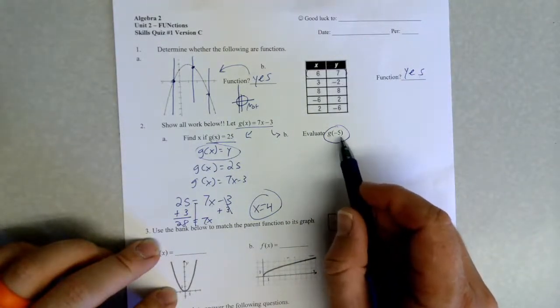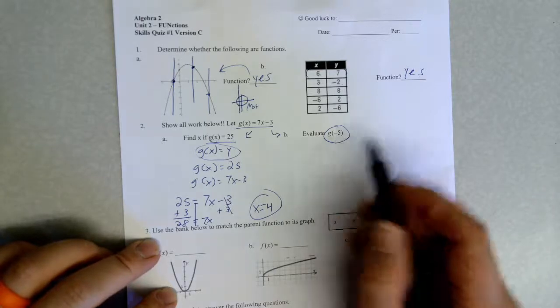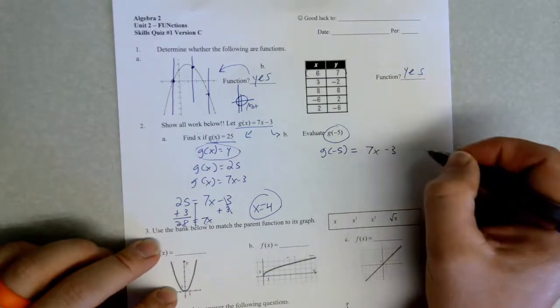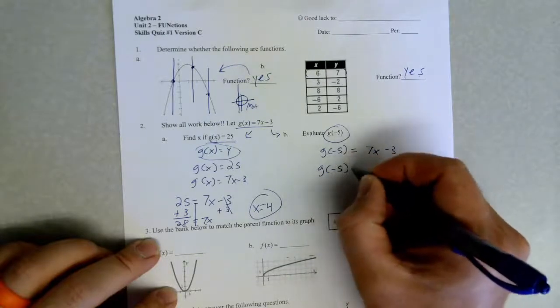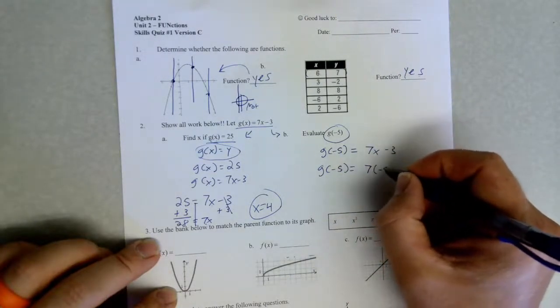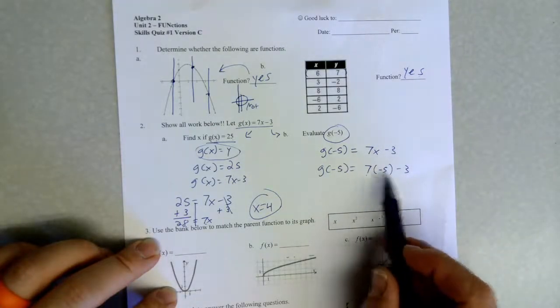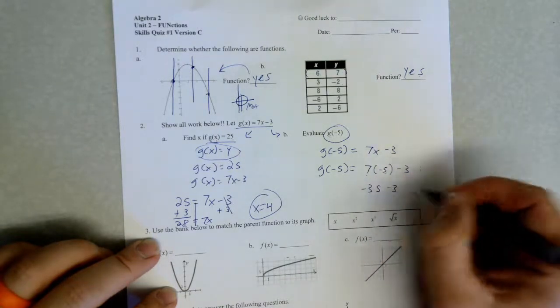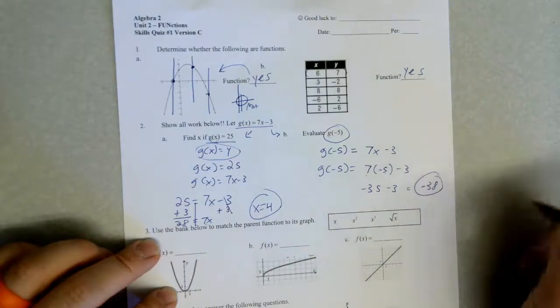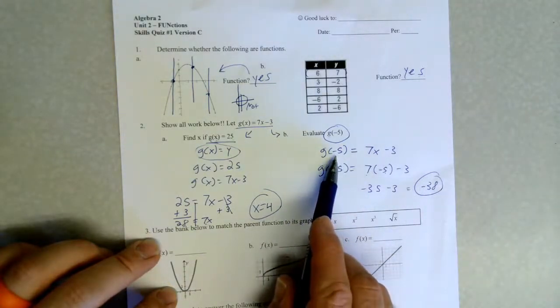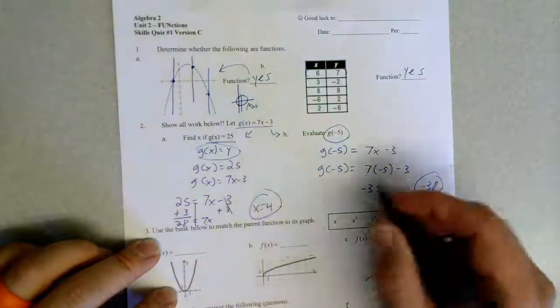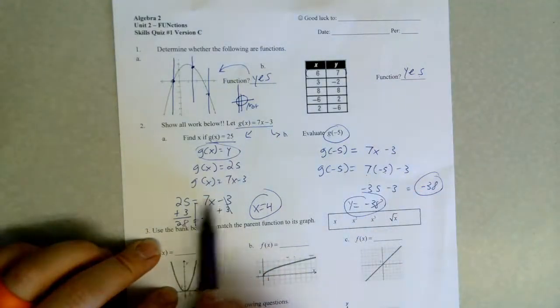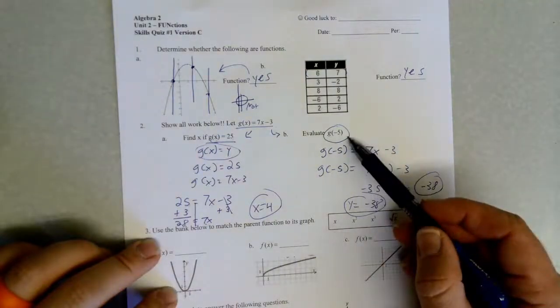And one, oh here we go, evaluate. Here notice it's not g(x) but now g(-5). That negative five means that is our x value, that is our input. So that means 7x - 3, we're going to plug in that negative five into the x. All right, 7 times -5 is -35. -35 - 3 is -38. So that just tells us when our input is -5 into this function, our output or our y value is -38.